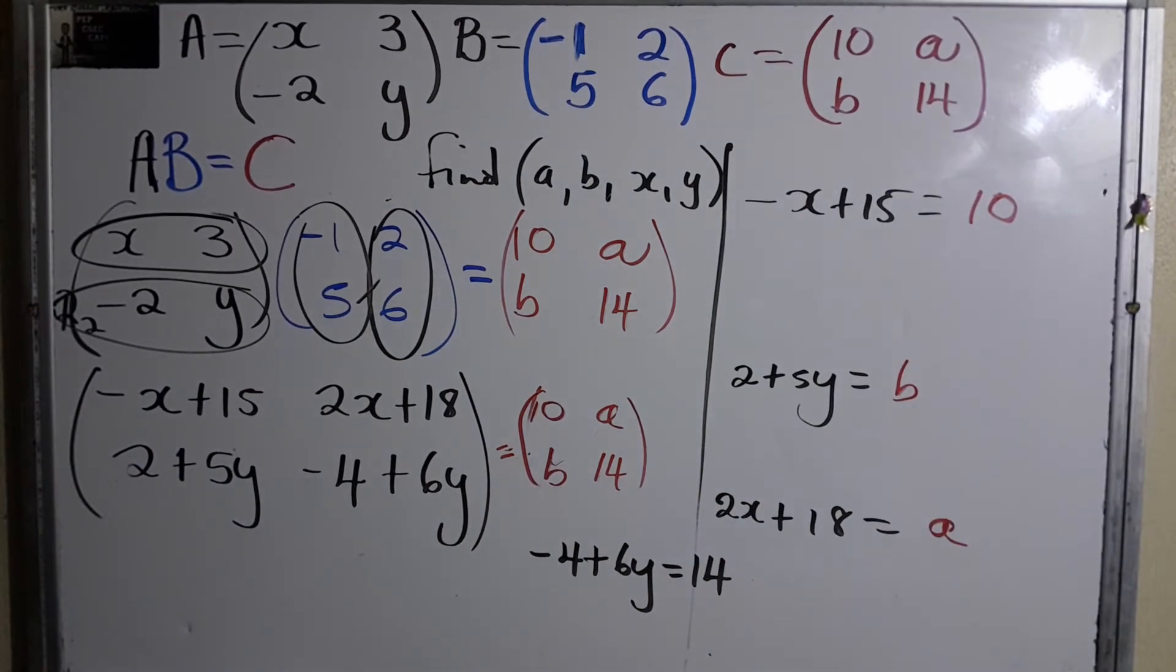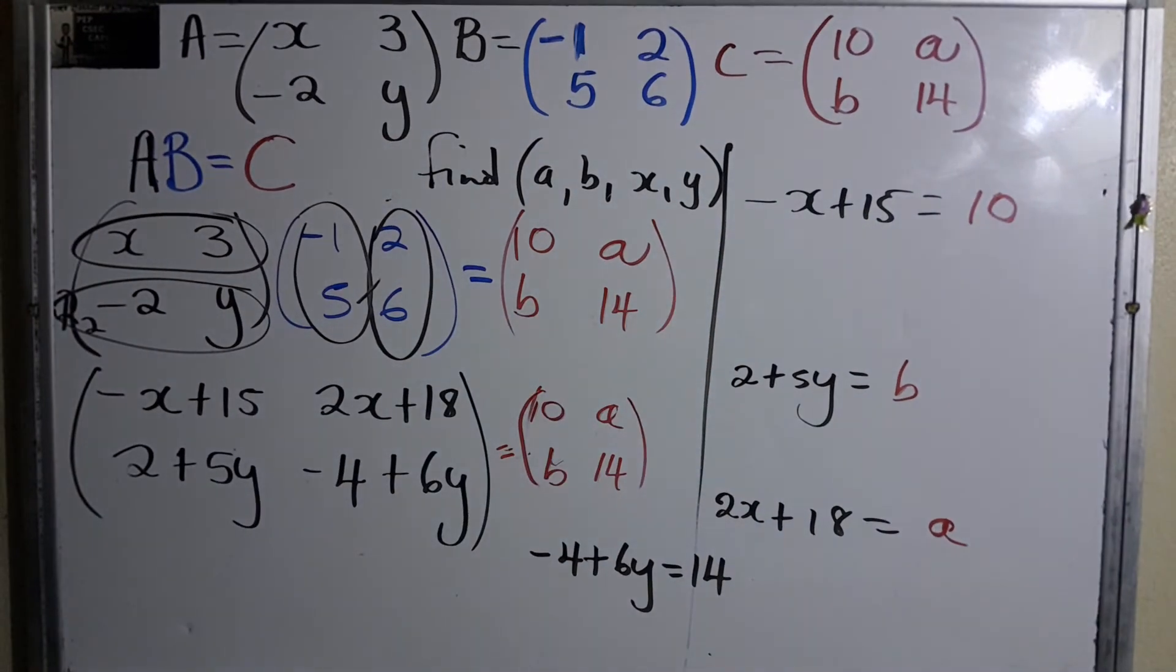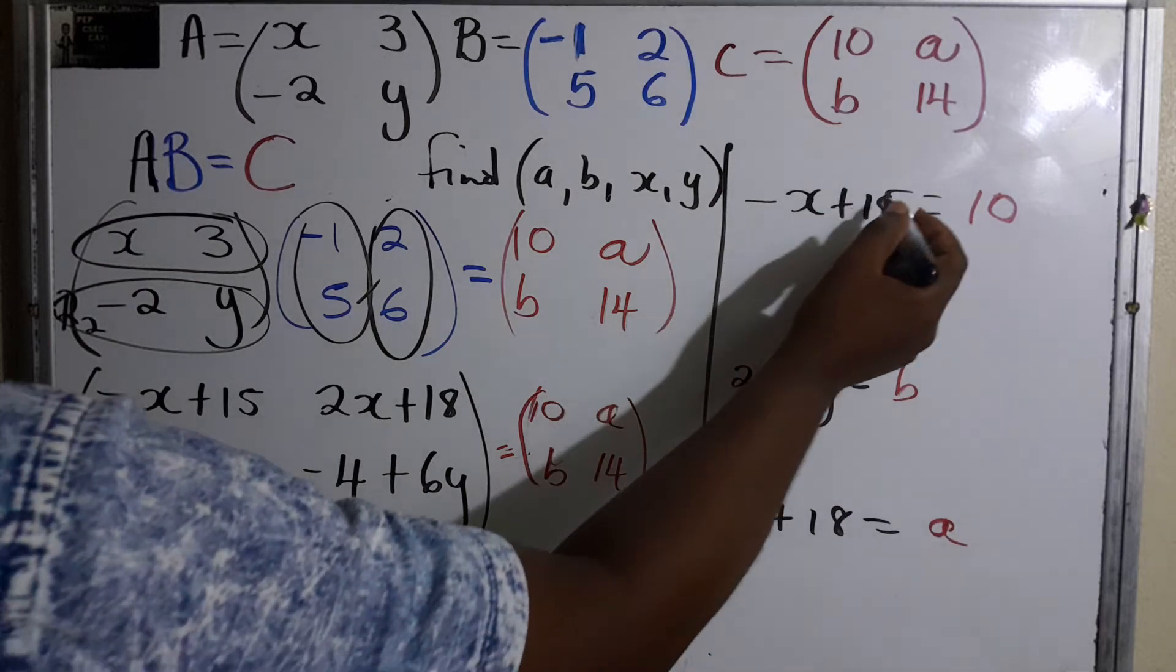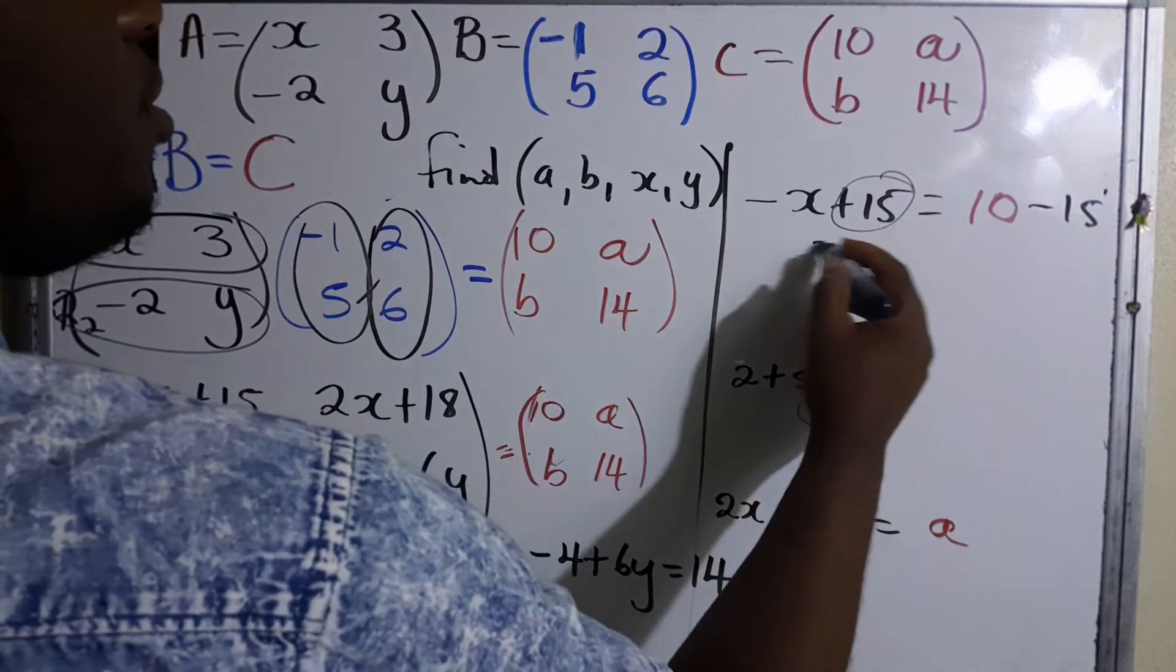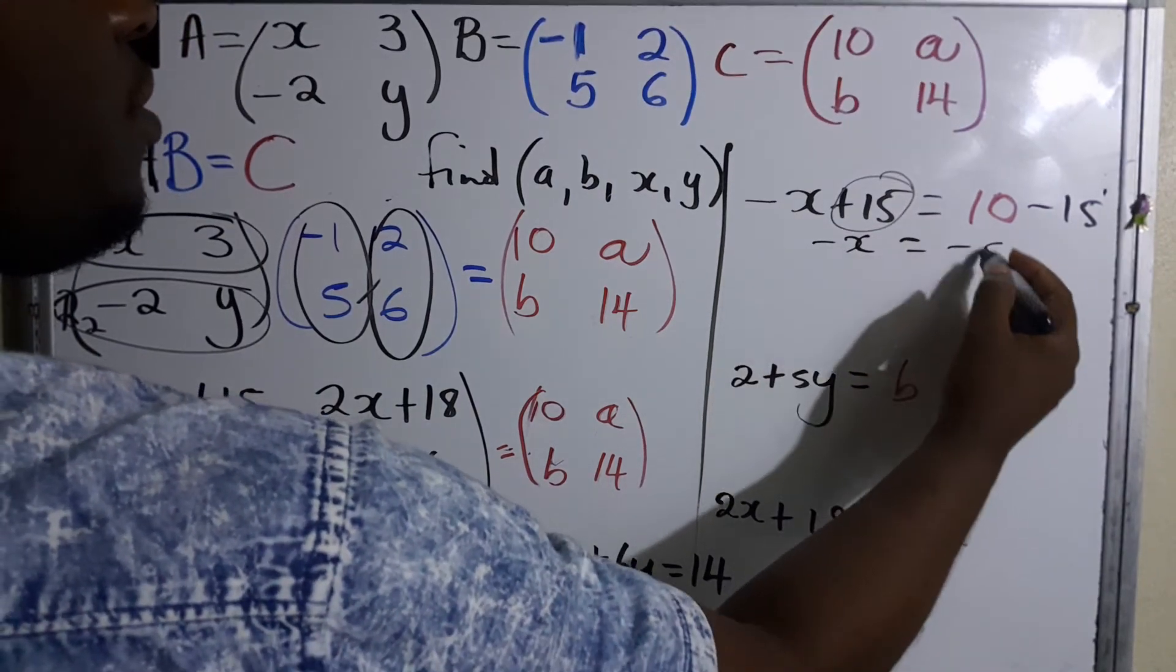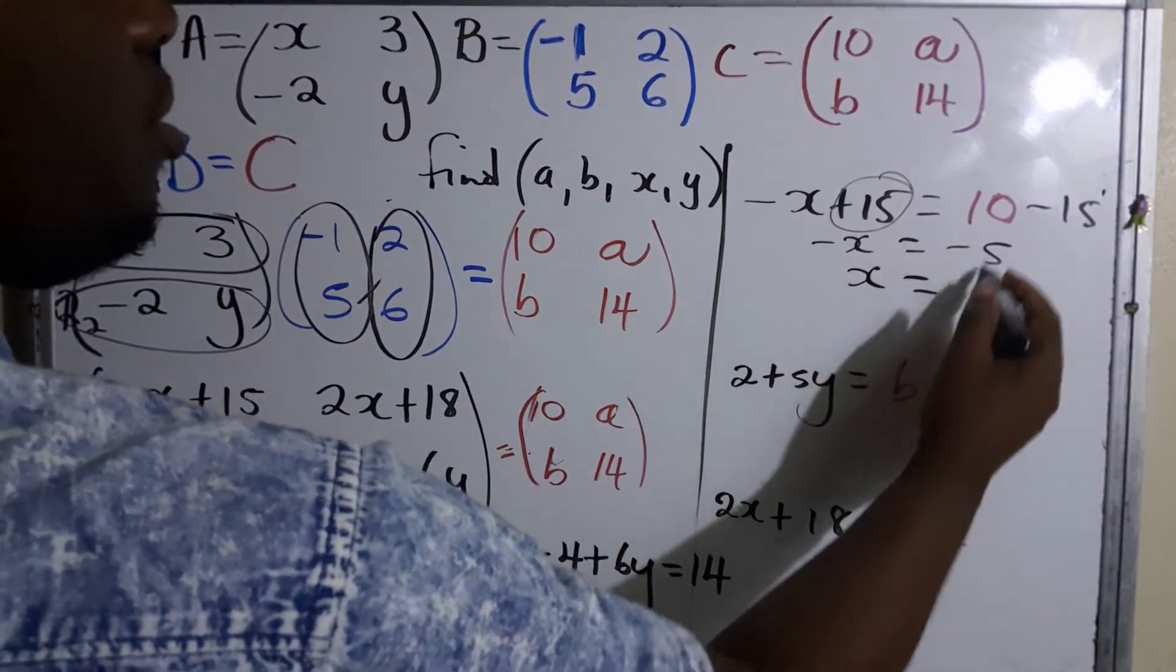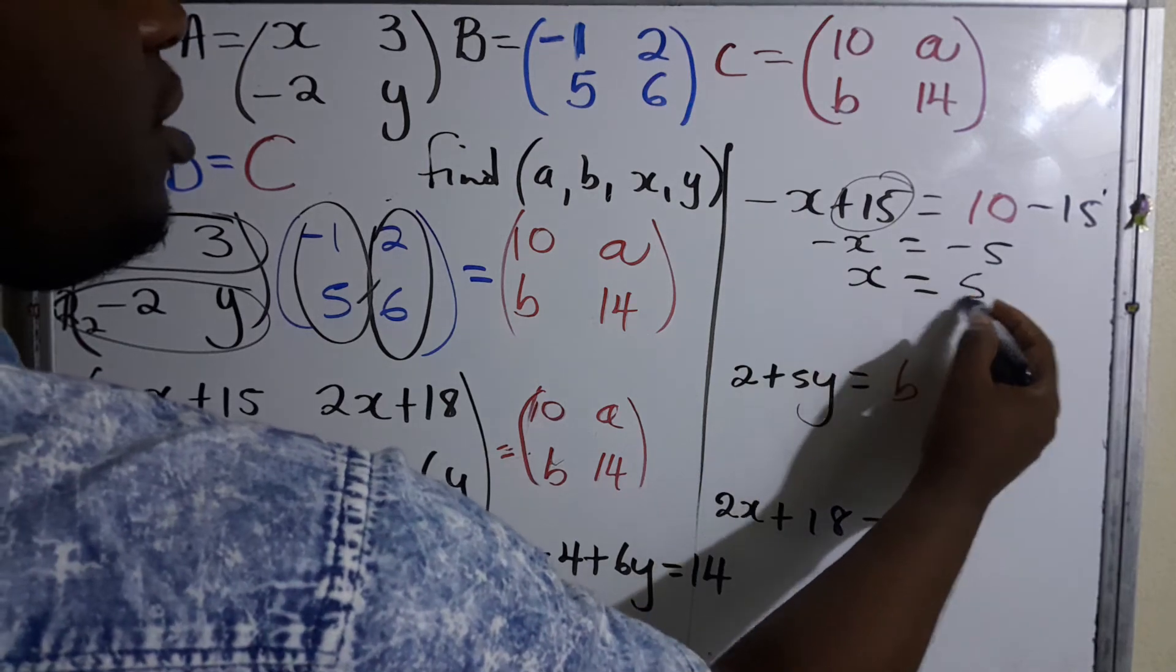So guys, what you're going to do is look and see which one has one unknown. Of course it will be this: -x plus 15 equals 10. So we can solve for x right away because there's only one unknown. We minus 15 from both sides, and x works out to negative cancel negative 5.